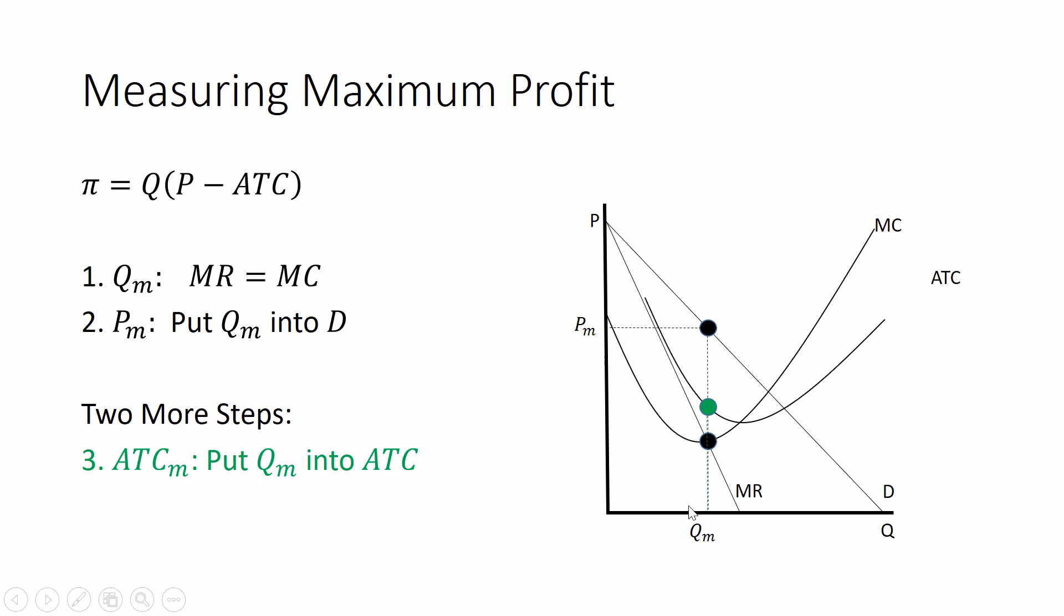And that happens right there at the green dot. At that green dot, the average total cost is to the left on that axis is marked there. Something I want you to notice when we look at these three dots along here. Once I chose the quantity, I never leave this quantity. Price, average total cost, quantity, they're all in a straight line up and down from each other. That's the price I want to charge at this quantity. That's the cost at this quantity. A different quantity would have a different cost and price.